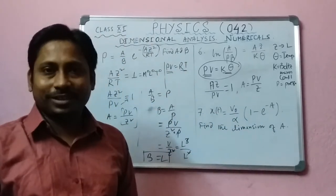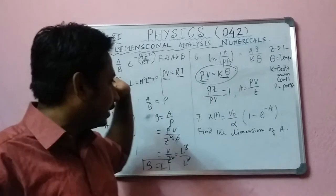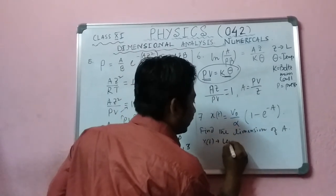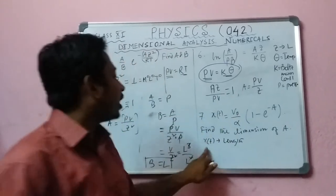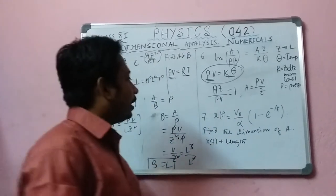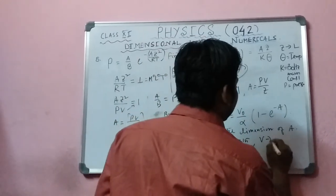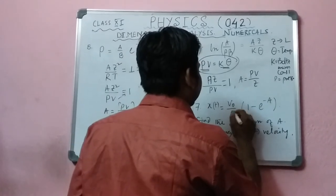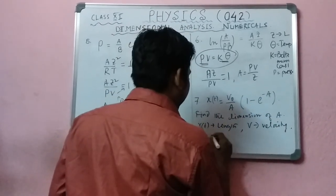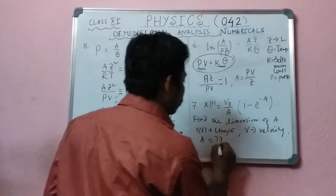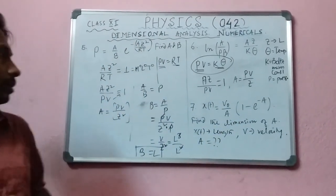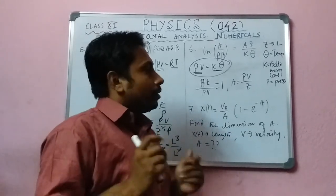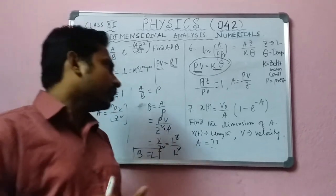Question number seven is similar to questions five and six. Here x represents length, and v represents velocity. You need to find the dimension of a. Students, try it yourself.